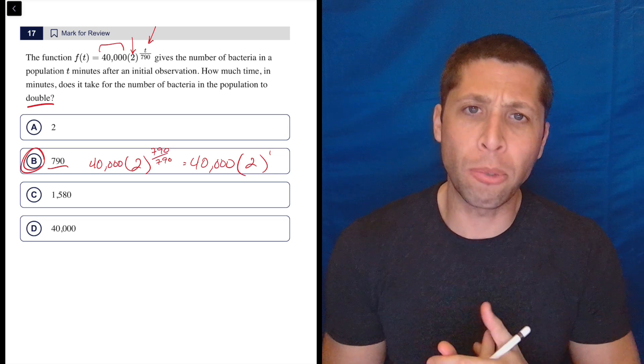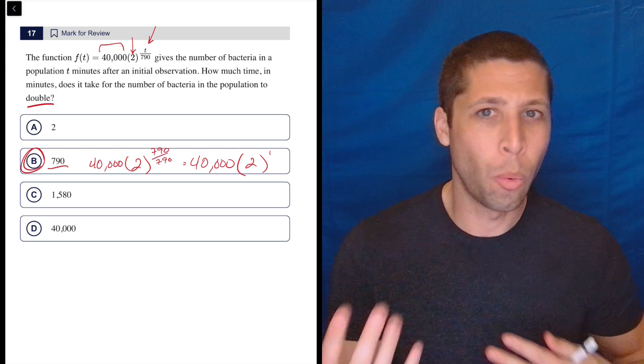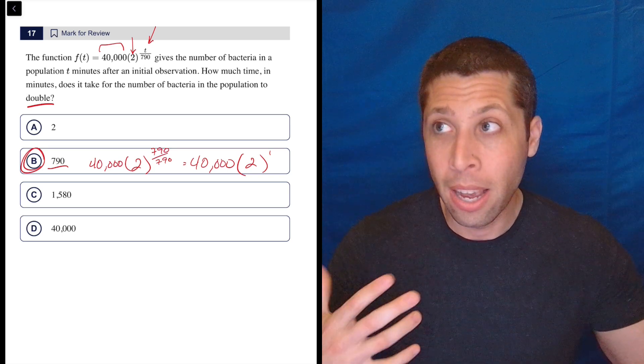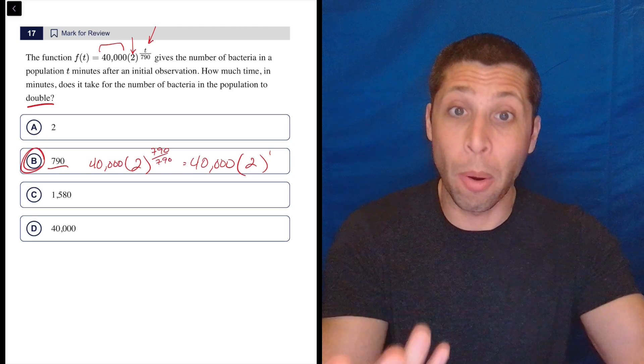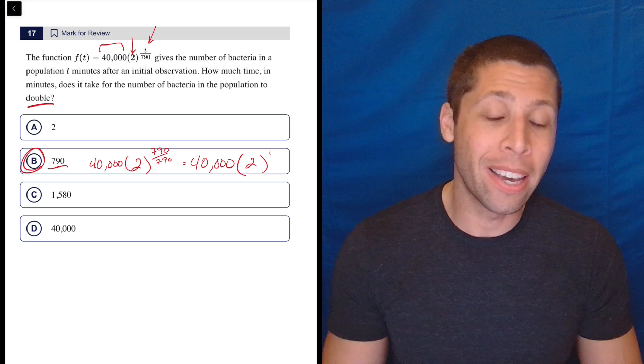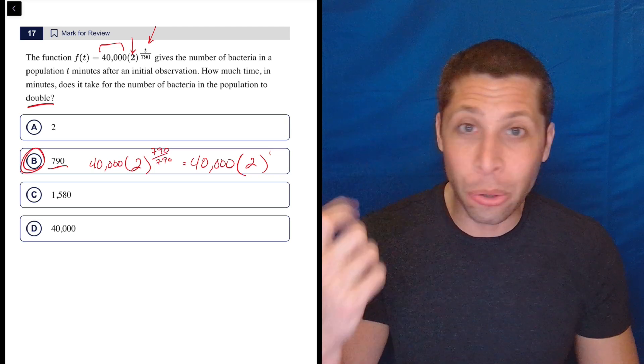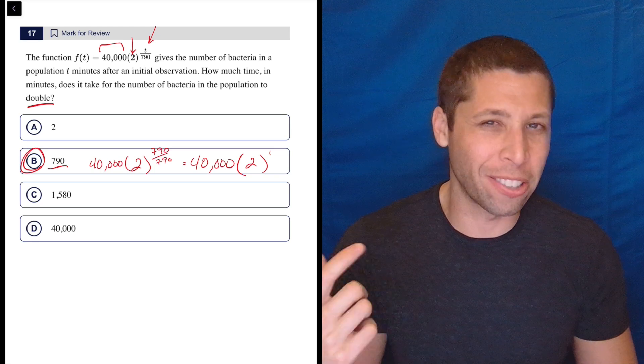But also don't just jump to conclusions that 790 is the answer. I could easily see the SAT coming up with a harder version of this question where the number in that exponent doesn't quite line up with what we'd expect. Maybe something else is happening and there's reducing of the fraction going on, or maybe the number in the parentheses there is slightly different.